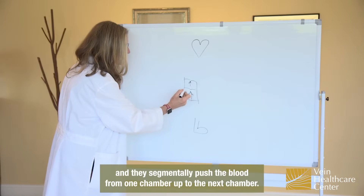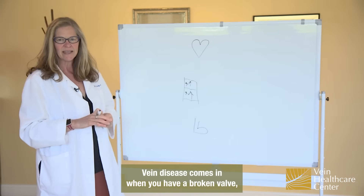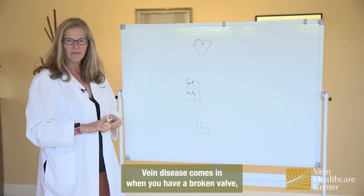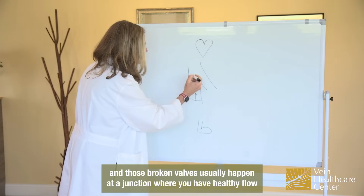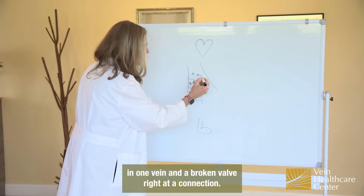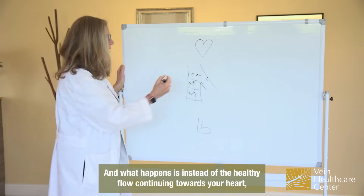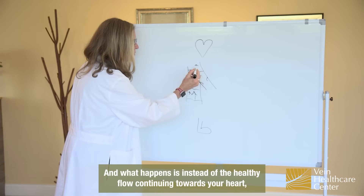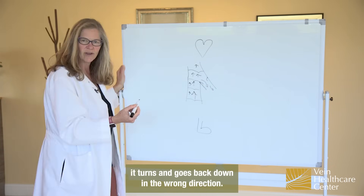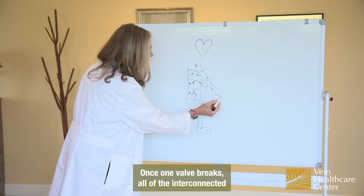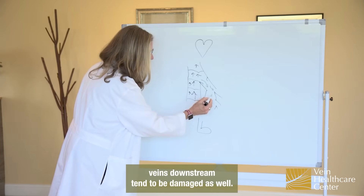The valves segmentally push the blood from one chamber up to the next chamber. Vein disease comes in when you have a broken valve. Those broken valves usually happen at a junction where you have healthy flow in one vein and a broken valve right at a connection. What happens is, instead of the healthy flow continuing towards your heart, it turns and goes back down in the wrong direction.